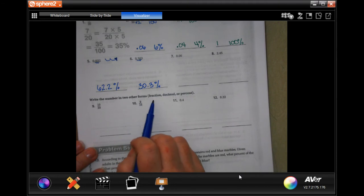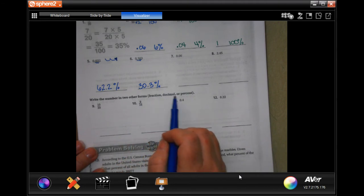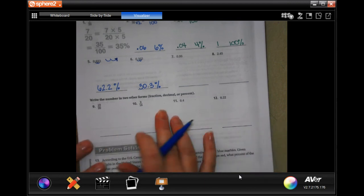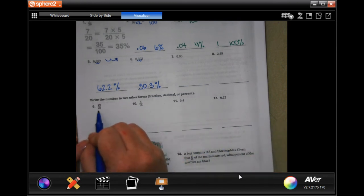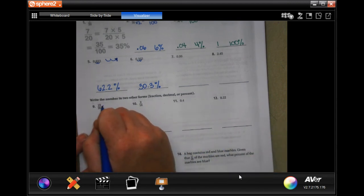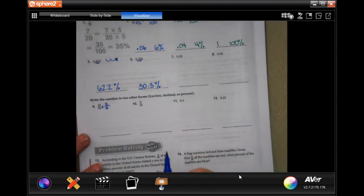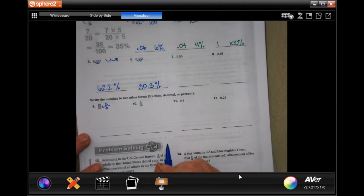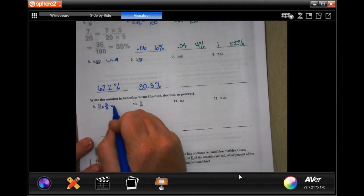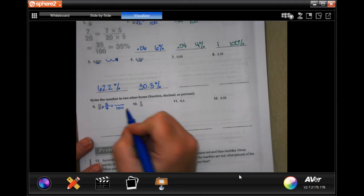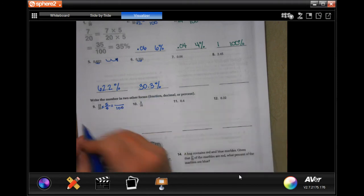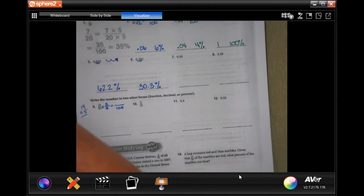We're going to write the number in two other forms, either fraction, decimal, or percent, depending on what's already written. This is already a fraction. So, we need to times that 20 by 5, which means we need to times the top by 5 to get to 100.